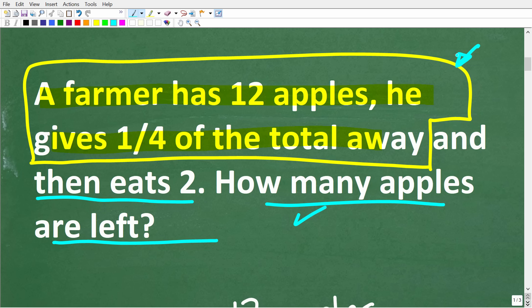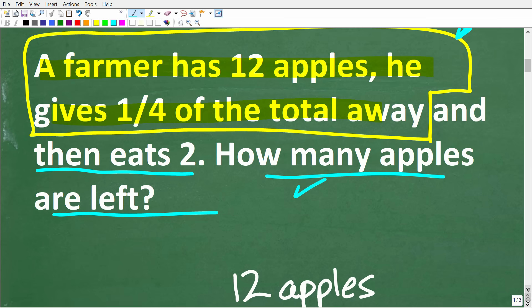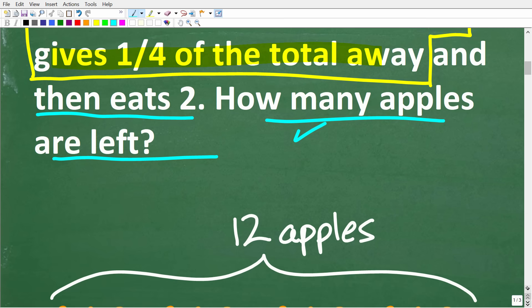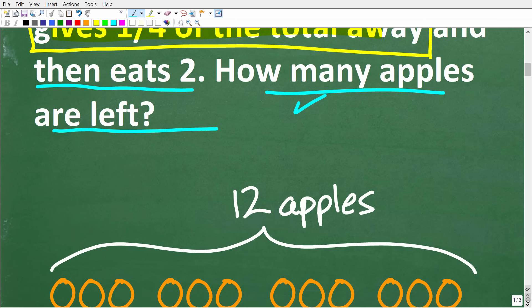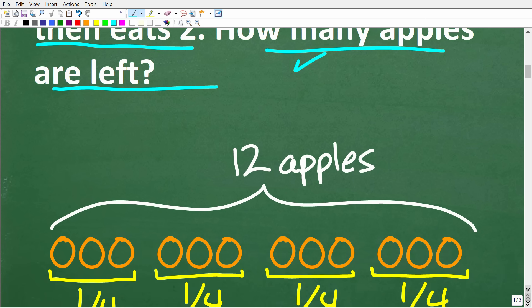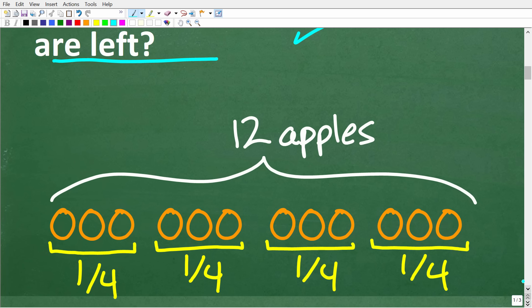So part one would be this part right here. A farmer has 12 apples, he gives one-fourth of the total away. Okay, so we need to figure out this amount right here and then we can move on to part two, which is after the farmer eats two, how many apples are left? But we don't want to be thinking about this part until we get this number right here. Okay, so a farmer has 12 apples, he gives one-fourth of the total away. So how many apples is he going to have left? Well, I'm going to show you kind of a visual way to think about this problem.